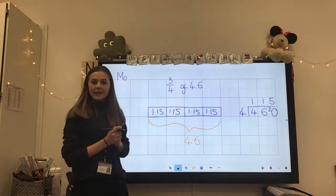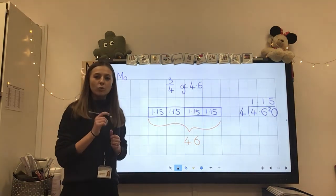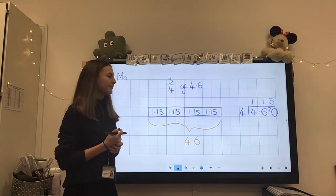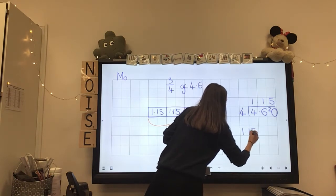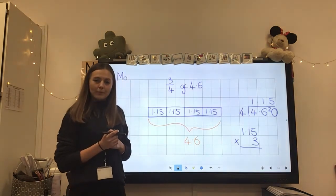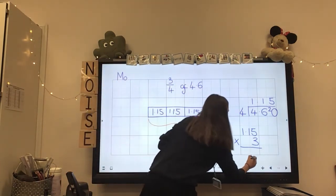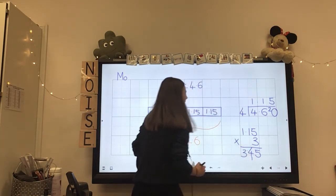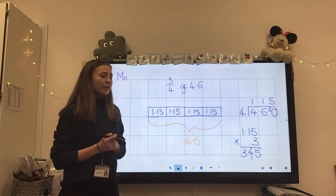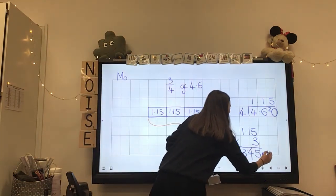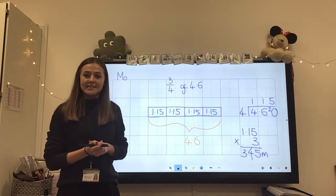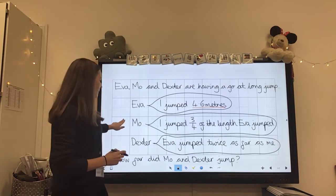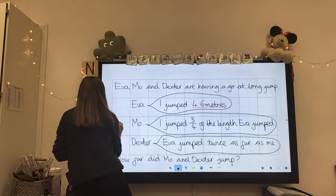Okay, excellent. So what would my next step be? Have a think. So now I know that one quarter is equal to 1.15. What do I need to do to 1.15 to work out what three quarters is? That's right. I need to multiply 1.15 by three. So three times five we know is 15. Three times one is three. Add our one that we've carried over. Three times one is three. So there we go. We've just figured out that Mo jumped 3.45 metres. So make sure when you do your answers, you add a little M on the end to show that we know that the unit is in metres. Okay, excellent. So let's go back to our question. So we've worked out now that Mo jumped, let's write this down, 3.45 metres.